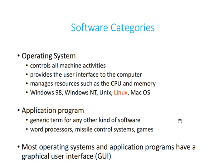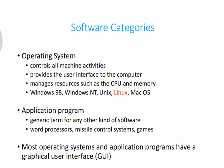Software can be classified depending on its function and the permissions for use — whether it is payable or free. Starting with function, we have operating systems and application programs. Examples of operating systems include Windows, Linux, and Macintosh. Operating systems control all machine activities, provide the user interface, and manage resources such as the CPU and memory.